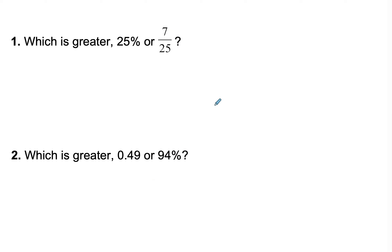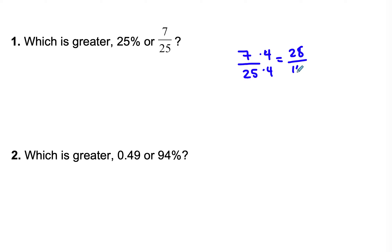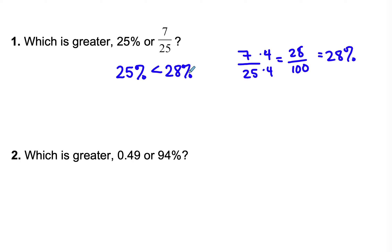Go ahead and pause the video and try these two. Okay, let's check our answers. For 7/25, I'm going to make a percent. I can do times 4 over times 4 to make my fraction something over 100. 7 times 4 is 28, and 25 times 4 is 100, so that equals 28 percent. So 25 percent is less than 28 percent, meaning the answer is 7/25. This is the type of work we expect to see on your paper.